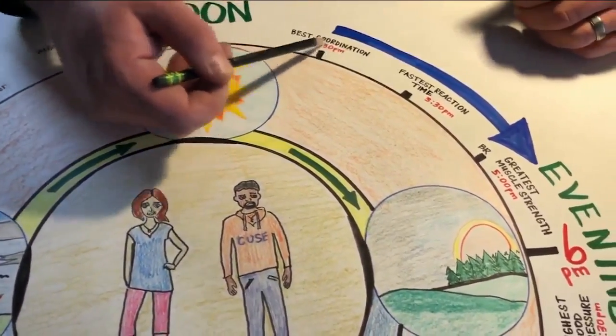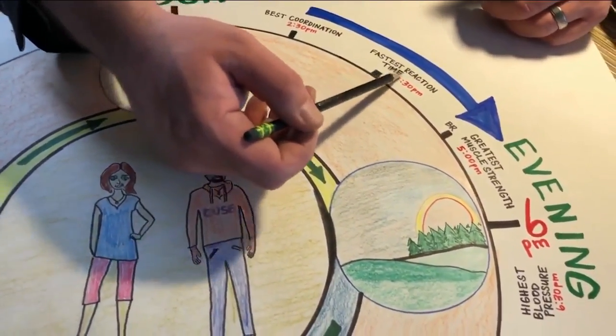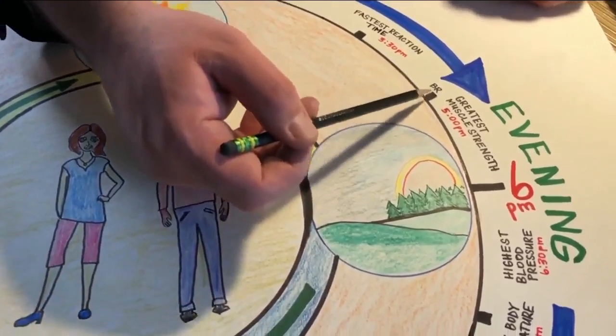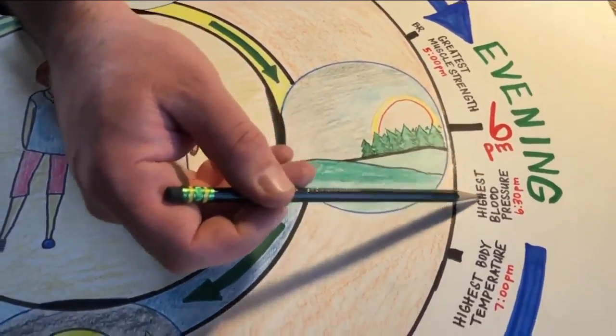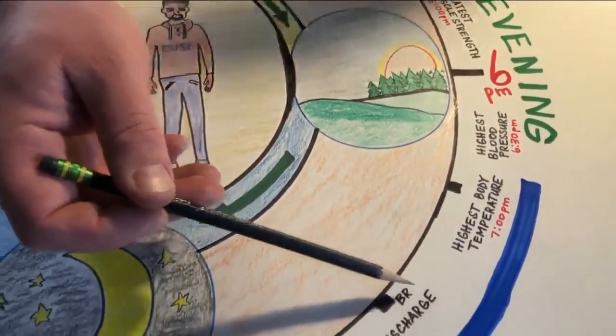And your coordination kicks in the best at 2:30. Then you have the fastest reaction time later in the afternoon. You're strongest with your muscles by 5 p.m., and then after 6 p.m., you start getting tired. The day starts winding down.